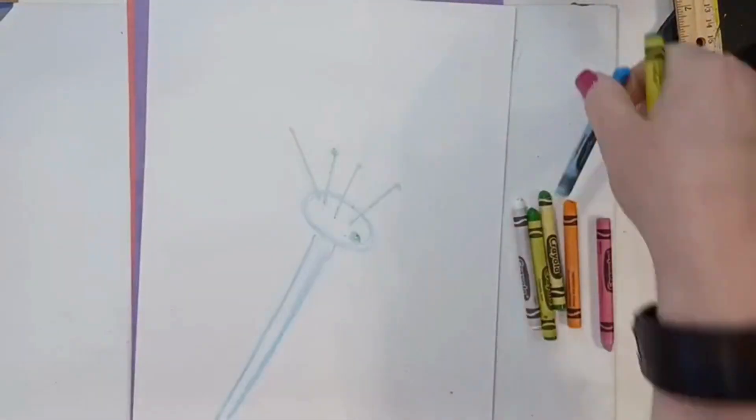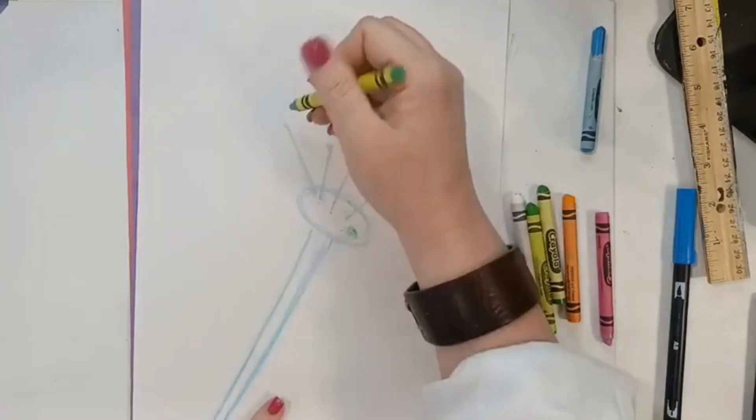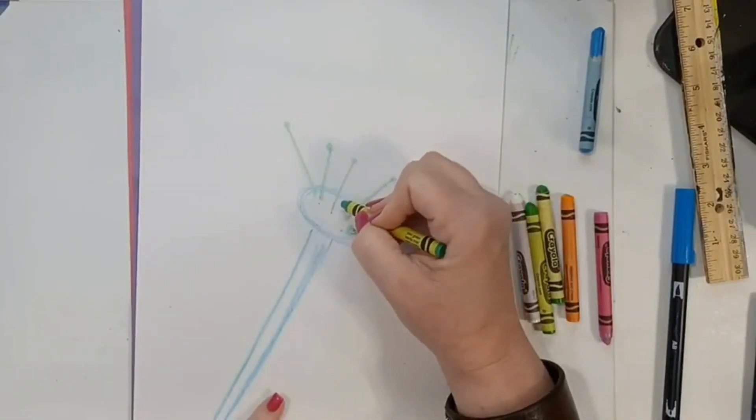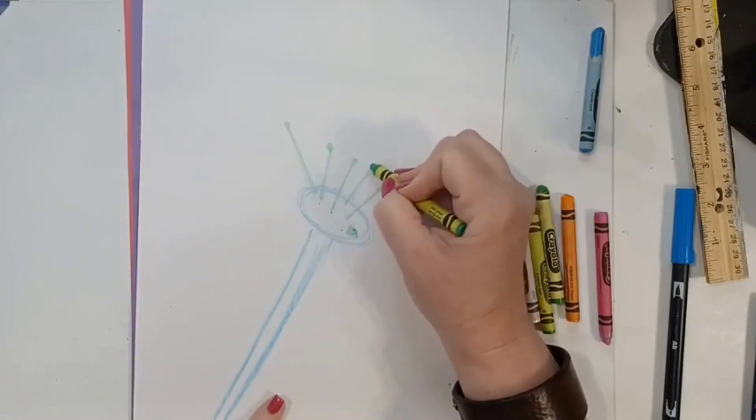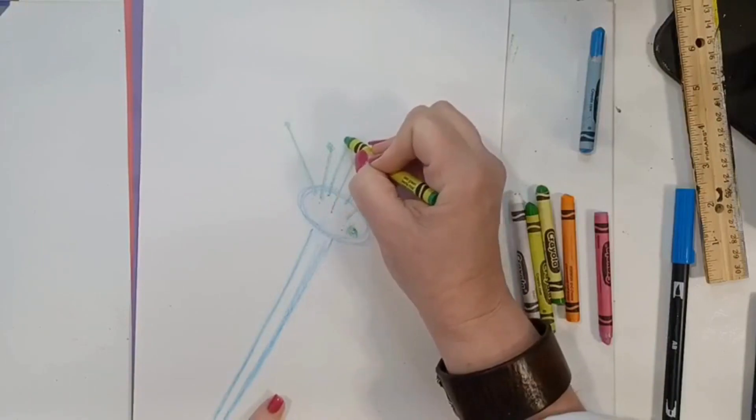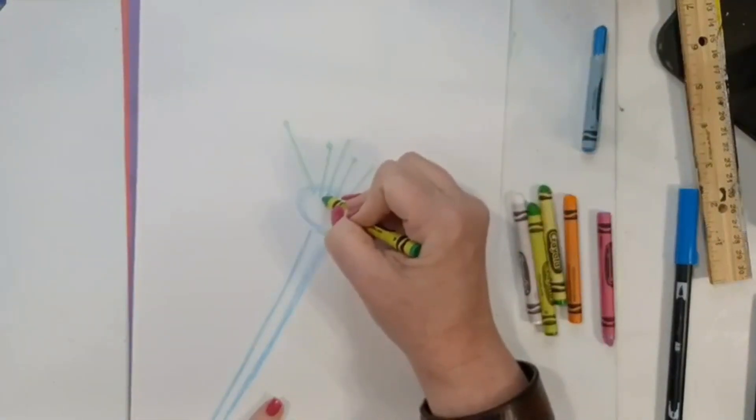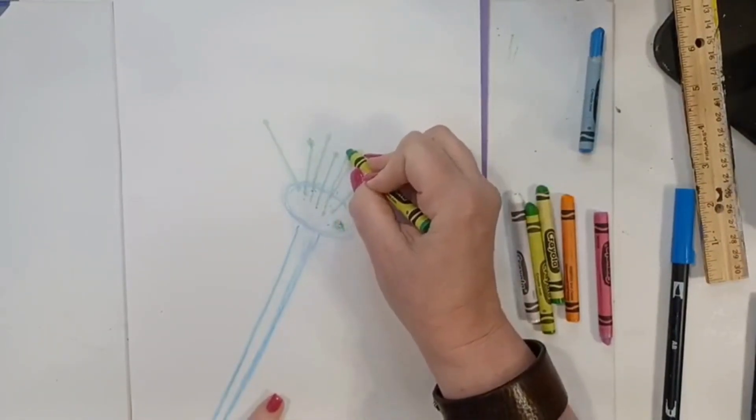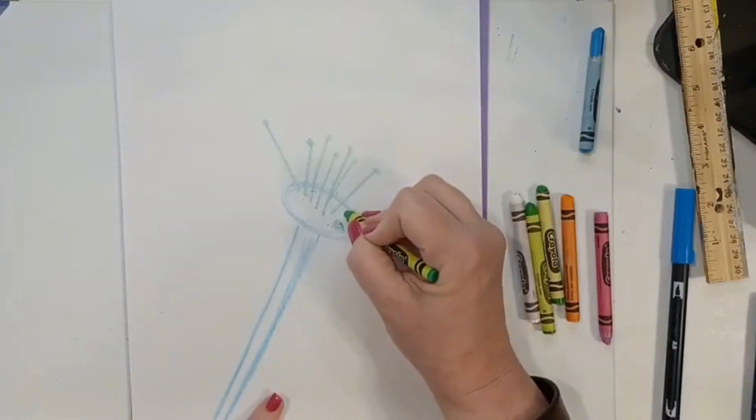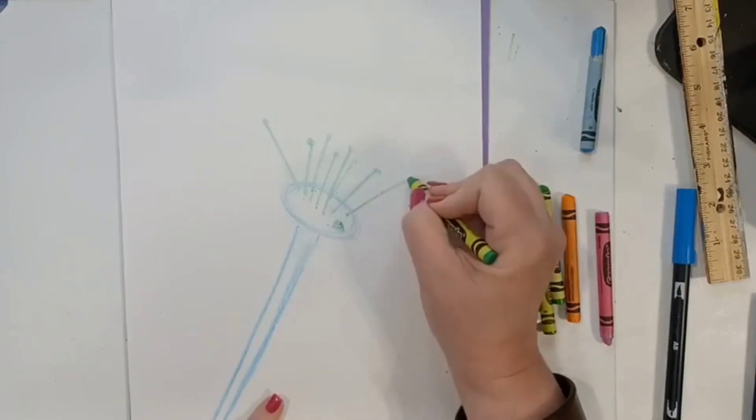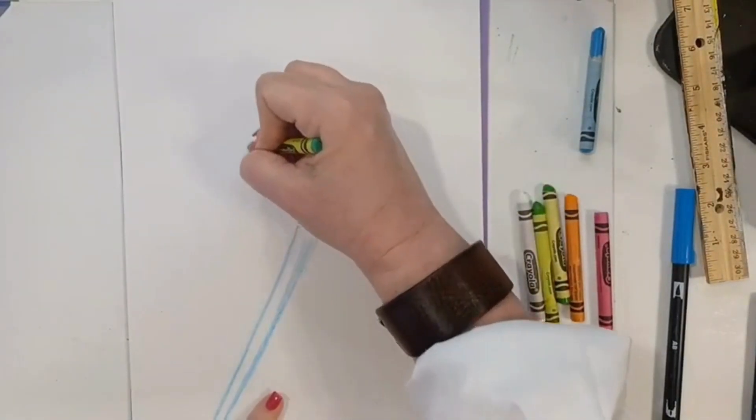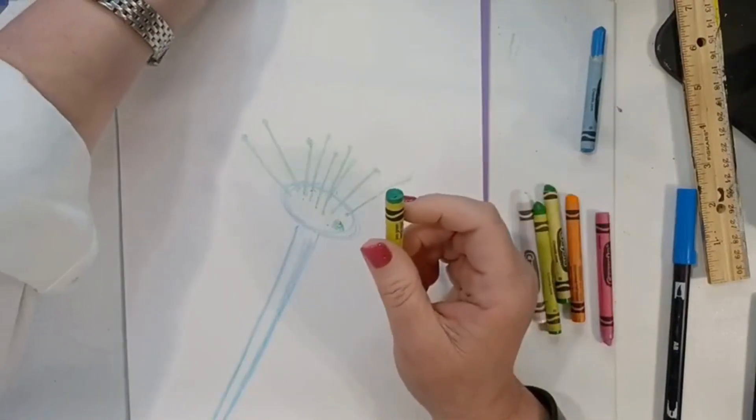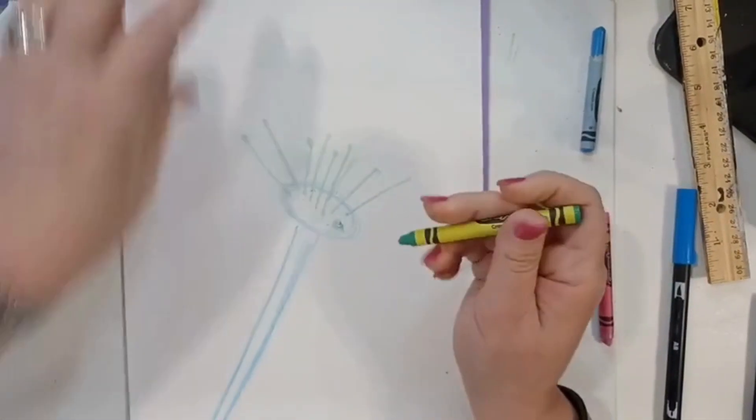Now you can put your crayon away if you kind of got what I was getting at. You can kind of see how this is going to go, so you can freehand it a little easier. At some point you're going to change the color of your lines.